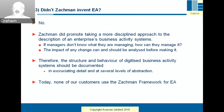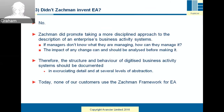Some people have the impression that John Zachman invented EA, which isn't really true. He did, however, publicize and promote it. He promoted taking a more disciplined approach to describing an enterprise's business activity systems, often drawing an analogy with building a Boeing 747. His message was: if managers don't know what they're managing, how can they manage it? He recommended documenting the structure and behavior of these systems in excruciating detail at five levels of abstraction. It was inspirational in its day, but today none of our customers use the Zachman framework for enterprise architecture.